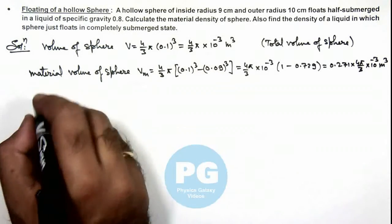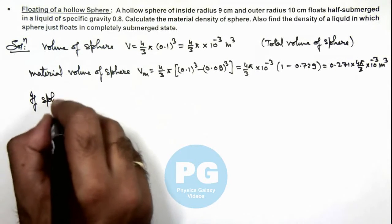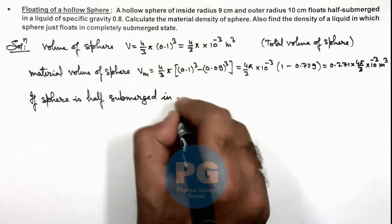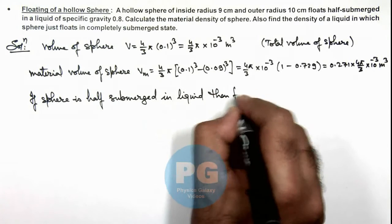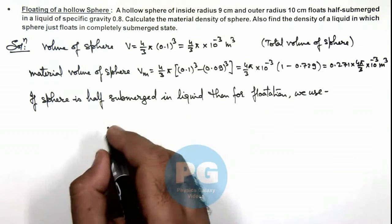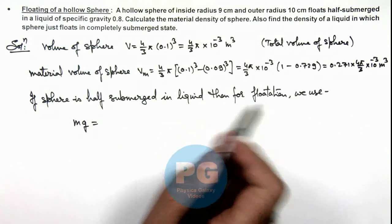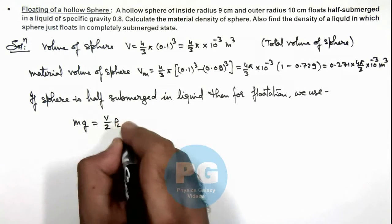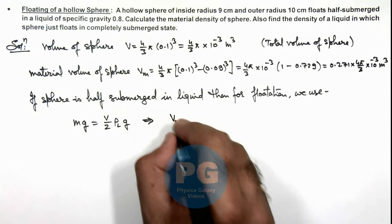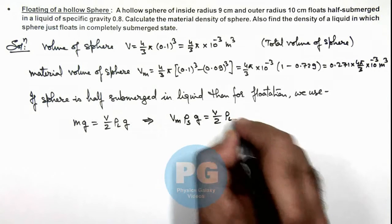Now considering the first condition where the sphere is half-submerged in liquid: for floatation, the weight of the sphere balances the buoyant force. The buoyant force in this situation is V/2 times ρ_liquid times g. This buoyant force balances the weight, and weight is given by volume of material multiplied by density of sphere multiplied by g, which equals V/2 times ρ_liquid times g. Here g gets cancelled out.